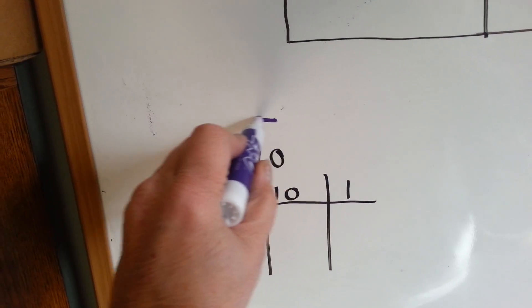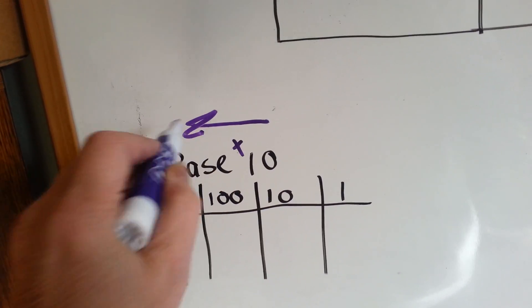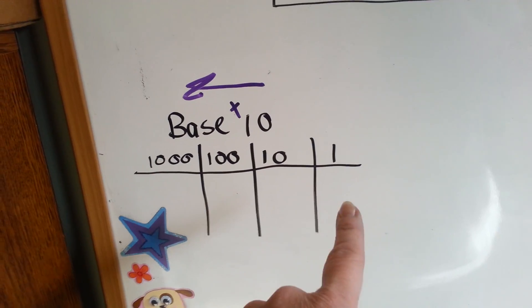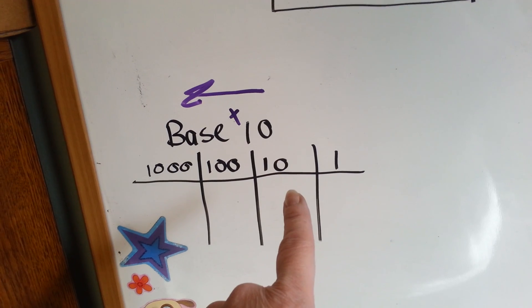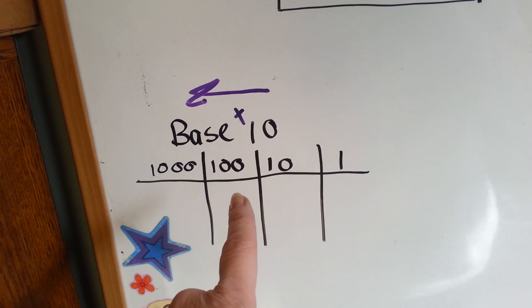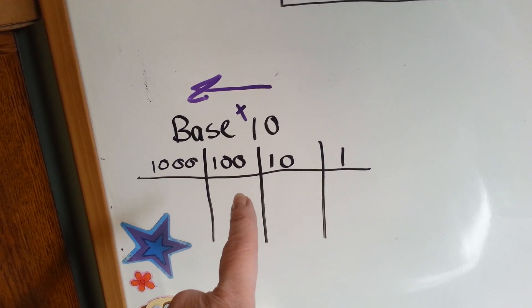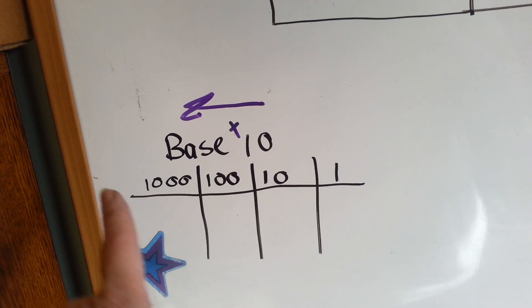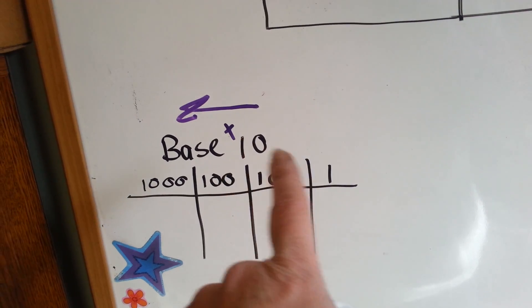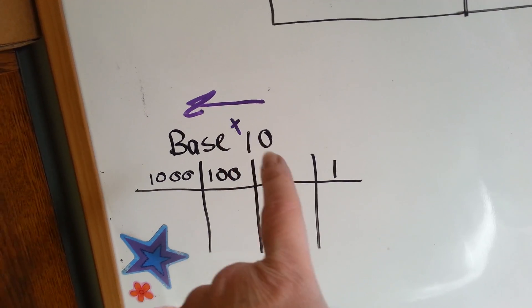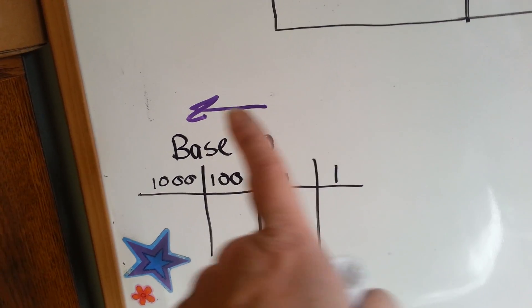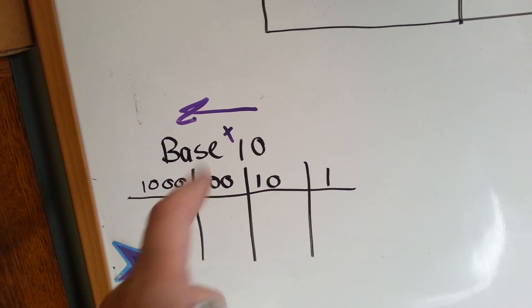We keep going this way, multiplying by ten. One times ten is ten, ten times ten is a hundred, one hundred times ten is a thousand, and so on. It's based off of tens and multiplying by tens going to the left.